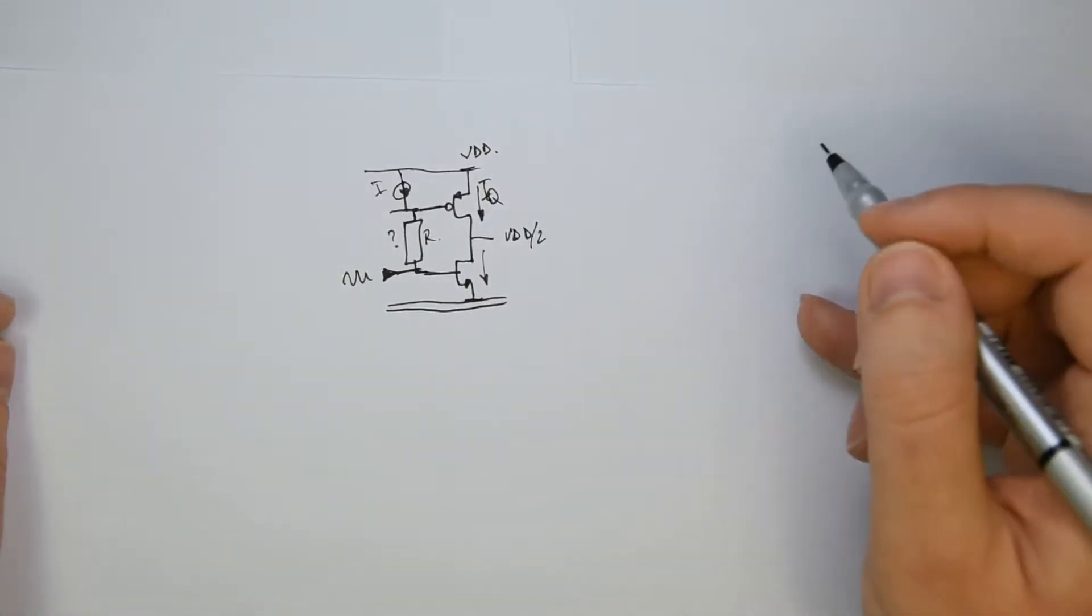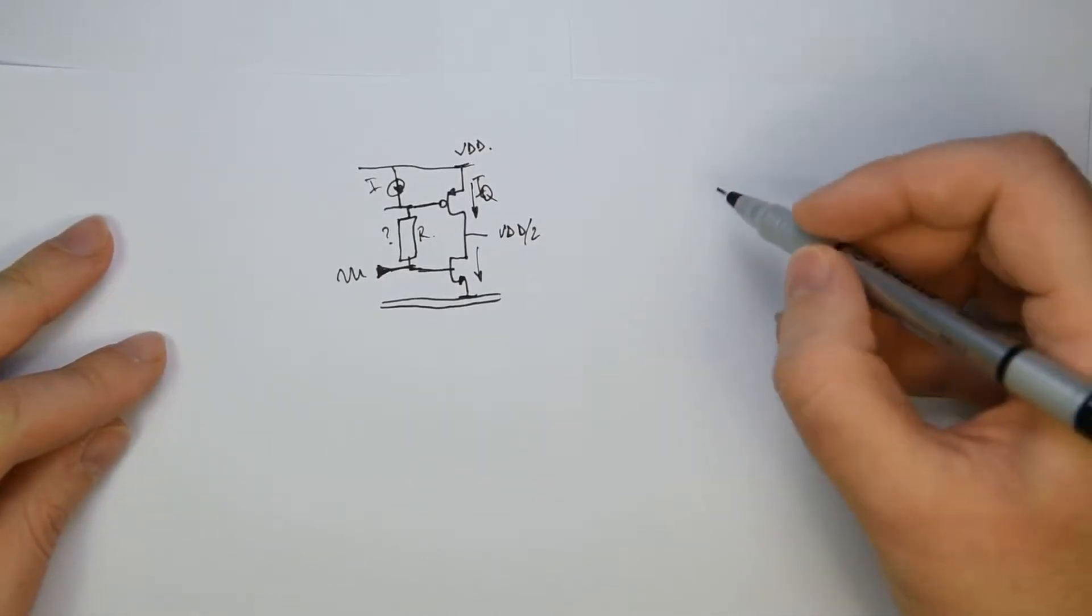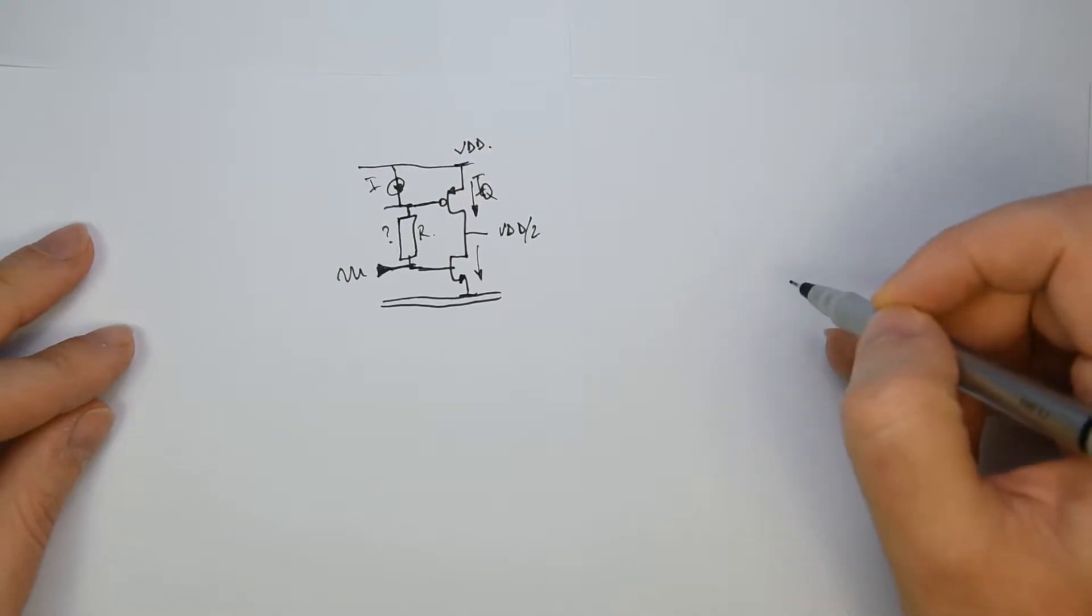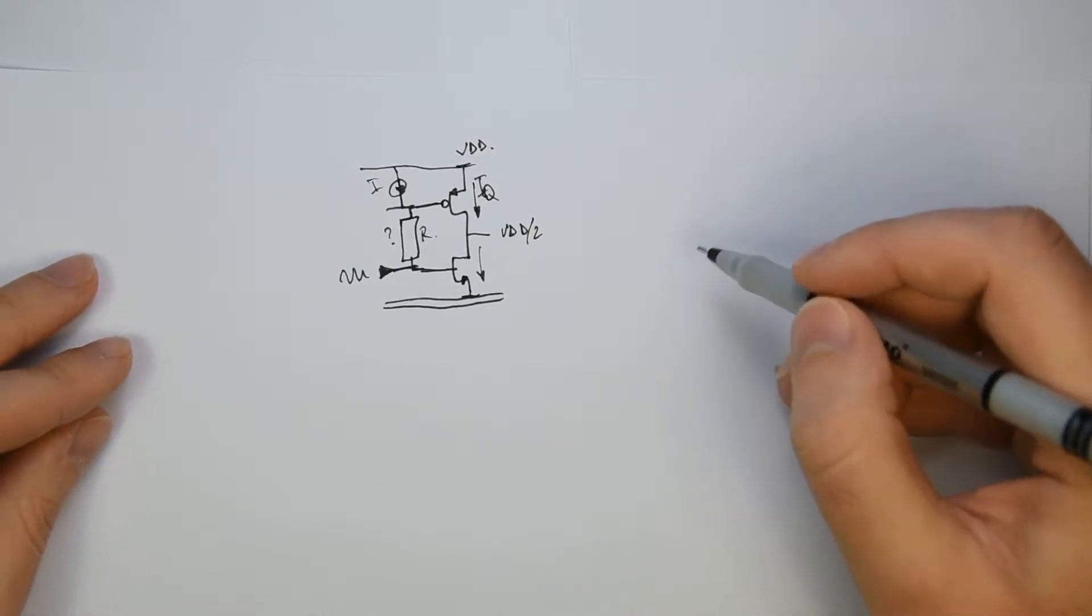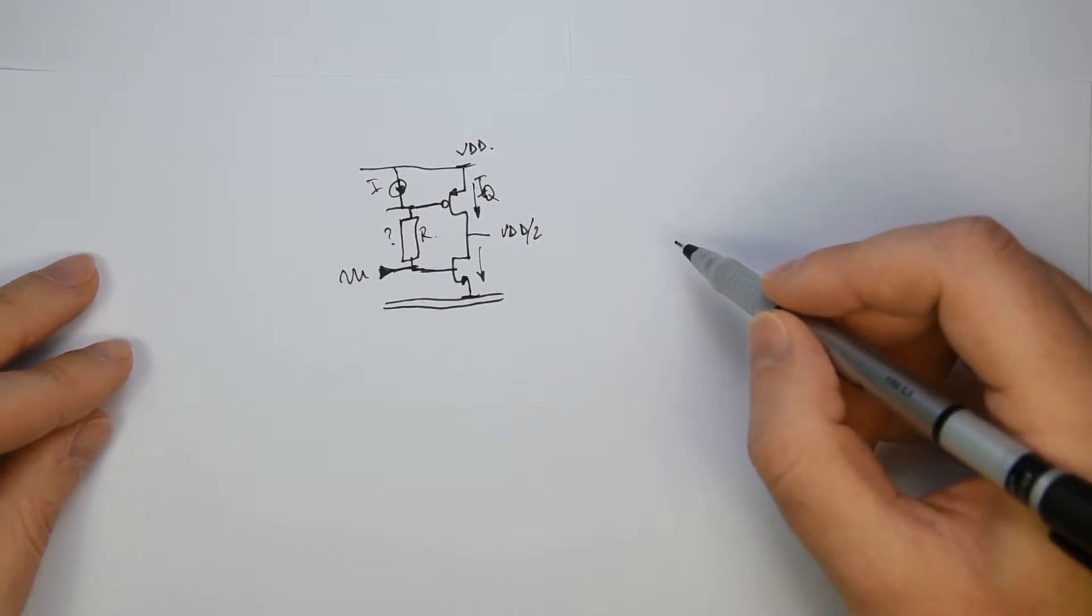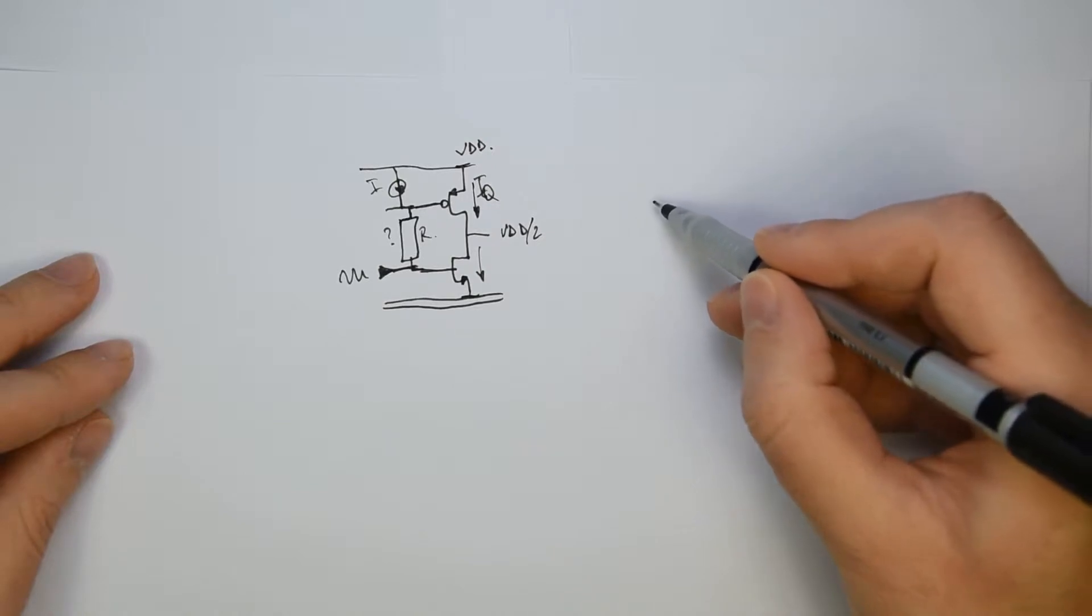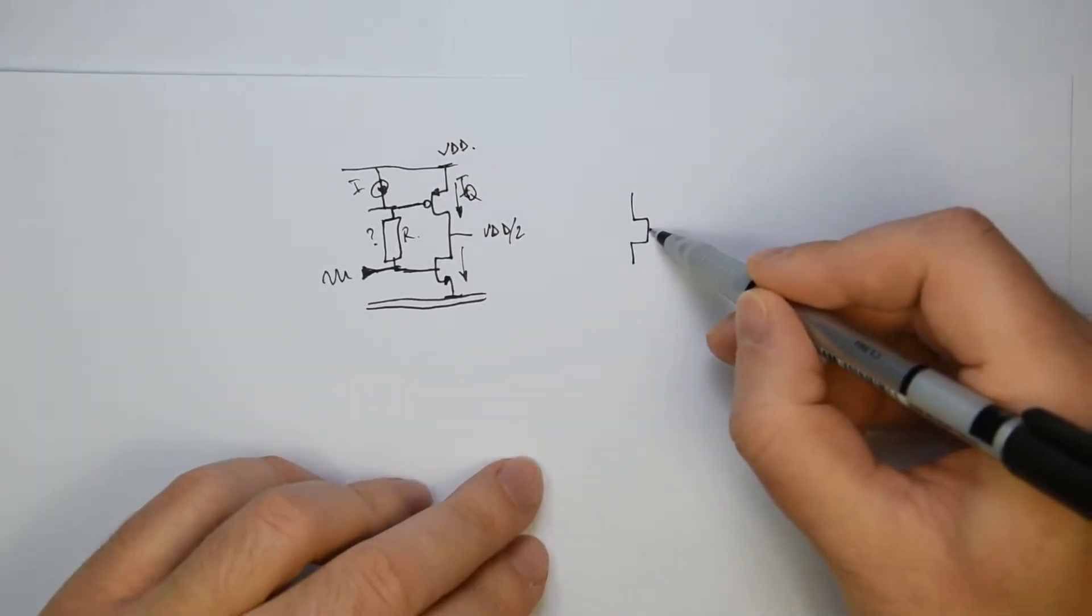The classical way and the old way to use it, and actually the very simple way, is to use a translinear loop. The translinear loop is the loop that is formed with VGSs, or in the case of the bipolar with VBE voltages. The translinear loop is actually very simple.